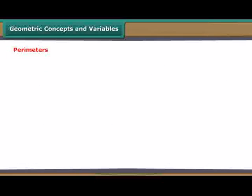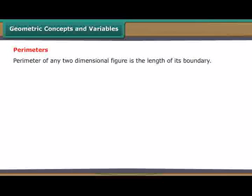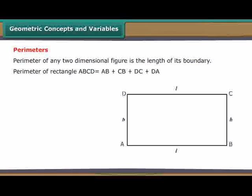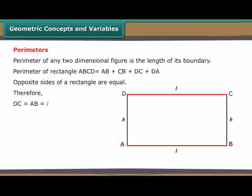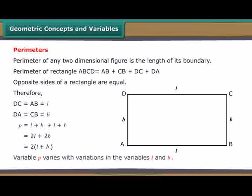Perimeters: Perimeter of any two-dimensional figure is the length of its boundary. Perimeter of rectangle ABCD is equal to AB plus CB plus DC plus DA. Opposite sides of a rectangle are equal. Therefore, DC is equal to AB is equal to L for length. DA is equal to CB is equal to B for breadth. If perimeter is represented by the variable P, then P is equal to L plus B plus L plus B, is equal to 2L plus 2B, is equal to 2 bracket starts L plus B bracket closes. Variable P varies with variations in the variables L and B.